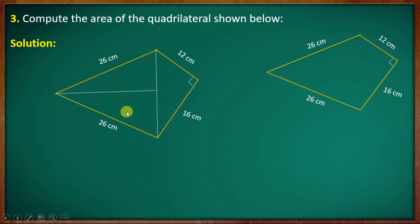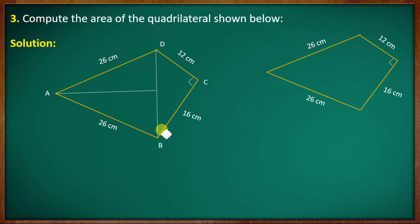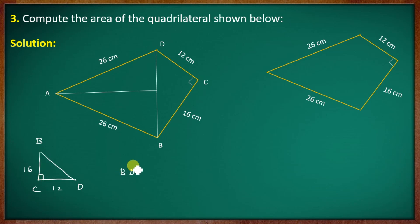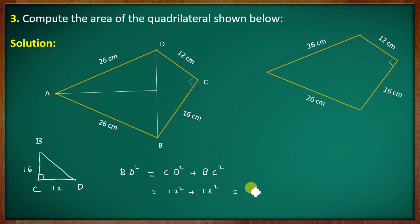According to this triangle ABC, triangle BCD has a right angle. The names are B, C, D with sides: CD = 12, BC = 16. At 90 degrees, the hypotenuse is BD. By Pythagorean theorem: BD² = CD² + BC² = 12² + 16² = 144 + 256 = 400. So BD = √400 = 20 cm.